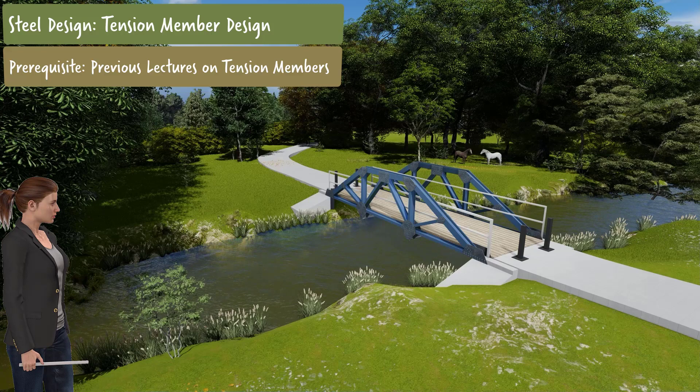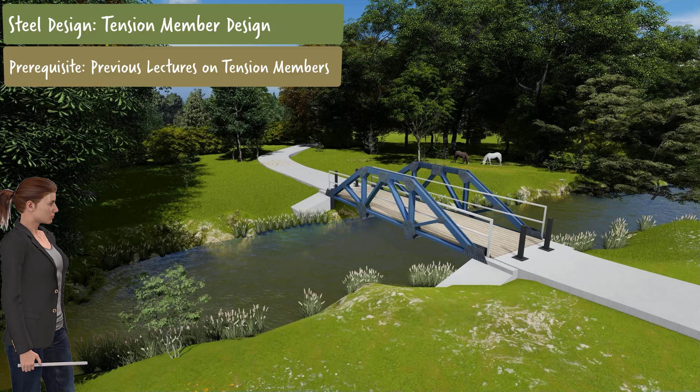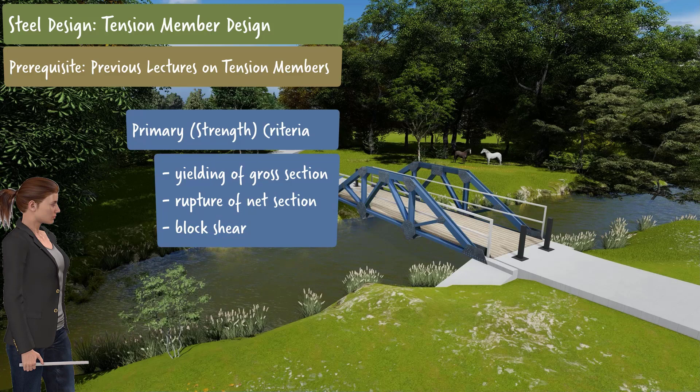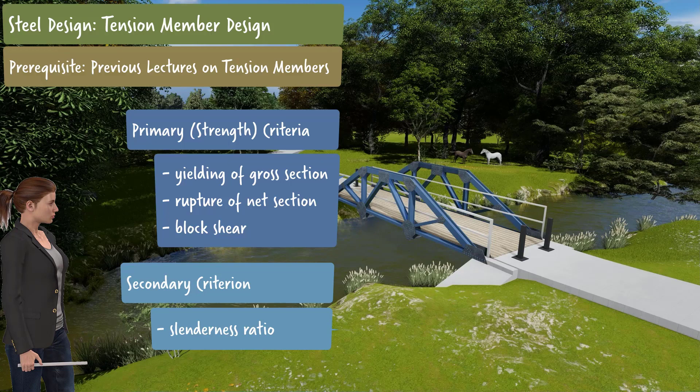This lecture focuses on the design of tension members in a simple pedestrian bridge. The design of steel tension members entails satisfying two sets of criteria: strength criteria, which we discussed in previous lectures, and a slenderness ratio criterion. In this lecture, we will use our acquired knowledge to design the members that undergo tension in the steel trusses forming the bridge.